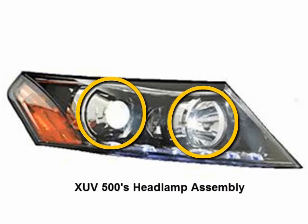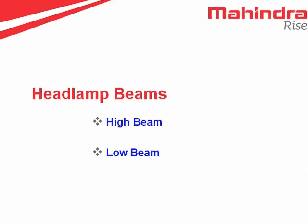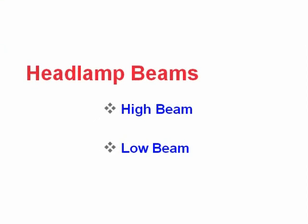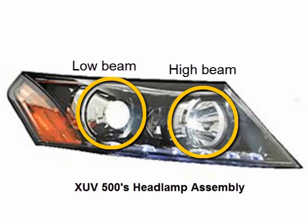Now let's discuss the headlamp beams. When we talk about headlamp beams, two key words pop up in our head: high beam and low beam. These are the two beam types that are available.